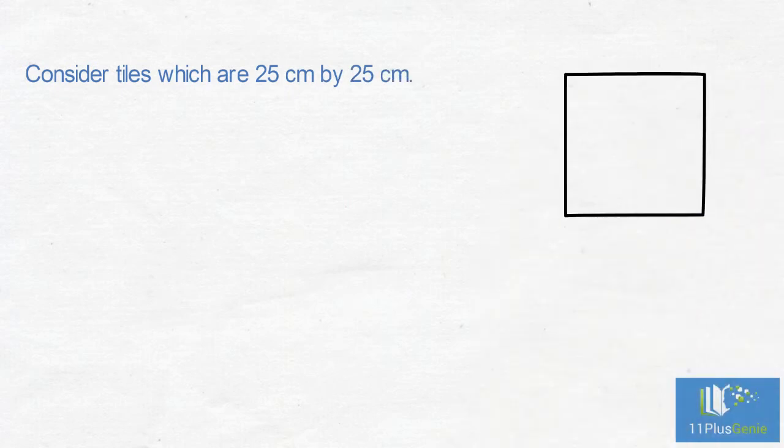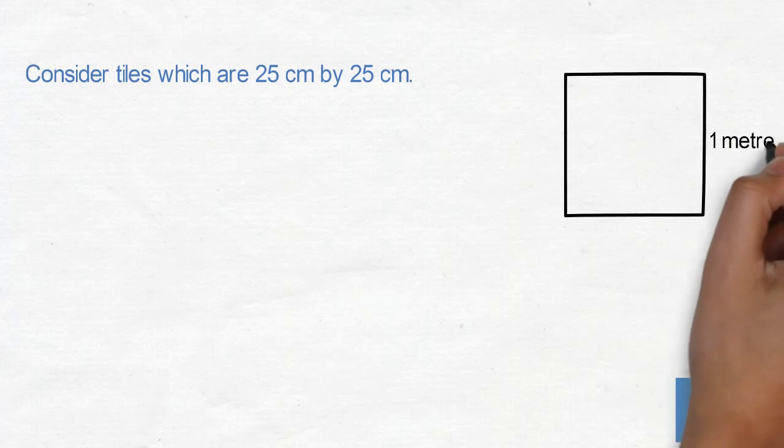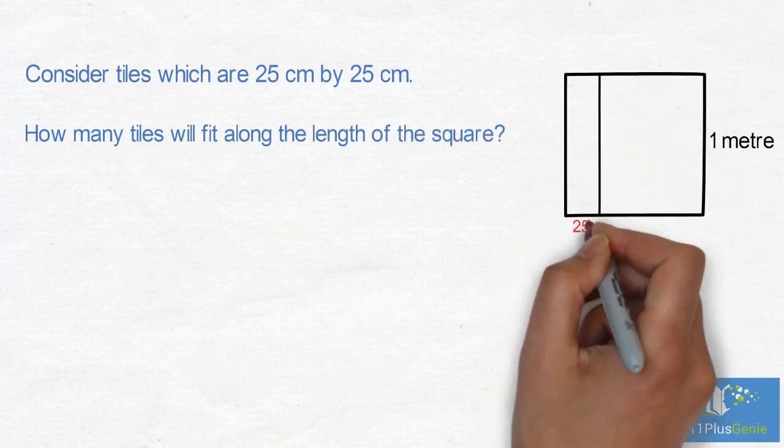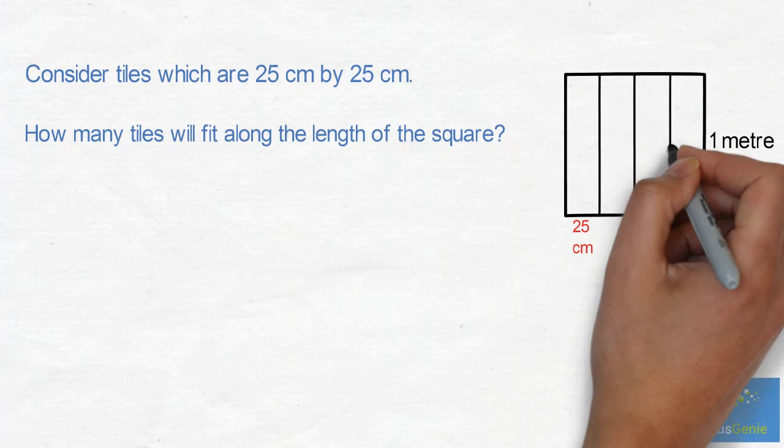Consider tiles which are 25cm x 25cm. This is our 1m x 1m square. We can fit four tiles along the length.